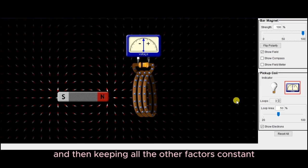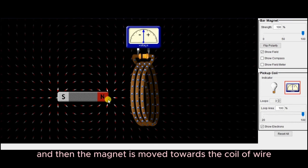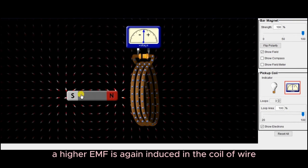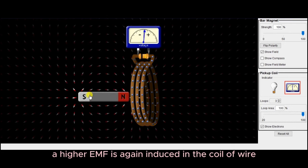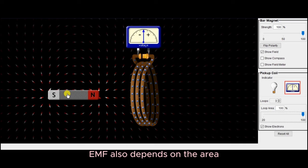And then, keeping all the other factors constant, if the area of the loop is increased, and then the magnet is moved towards the coil of wire, a higher EMF is again induced in the coil of wire, indicating that the induced EMF also depends on the area.